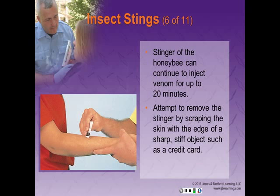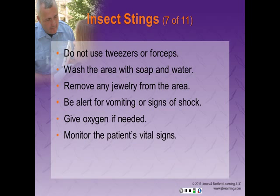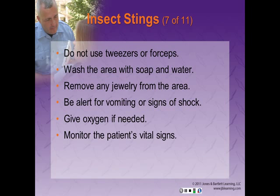The stinger of the honeybee can continue to inject venom for up to 20 minutes after the bee has flown away. Gently attempt to remove the stinger and attached muscle by scraping the skin with the edge of a sharp, stiff object such as a credit card or driver's license. Do not use tweezers or forceps, because squeezing may cause the stinger to inject still more venom into the wound. Gently wash the area with soap and water or a mild antiseptic, and try to remove any jewelry from the area before swelling begins. Position the injection site slightly below the level of the heart and apply ice or cold packs to the area. Be alert for vomiting or any signs of shock or allergic reaction. Do not give the patient anything by mouth; place them in the shock position and give oxygen if needed. Monitor their vital signs and be prepared to provide further support as needed.